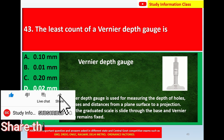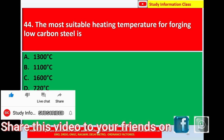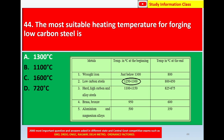Next question, question number 44: The most suitable heating temperature for forging low carbon steel. Options: A) 1300°C, B) 1000°C, C) 1600°C, D) 720°C. A reference table lists metals in the first column and temperature ranges in degree Celsius at beginning and end in the second and third columns.